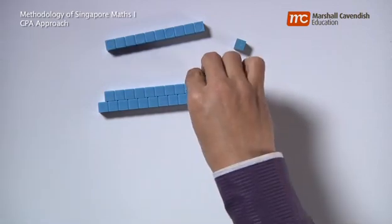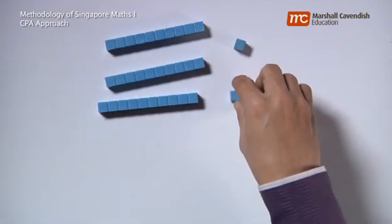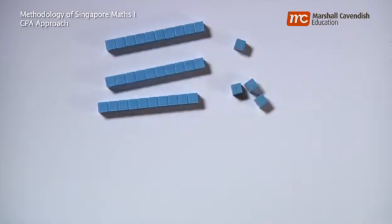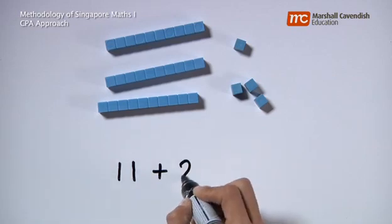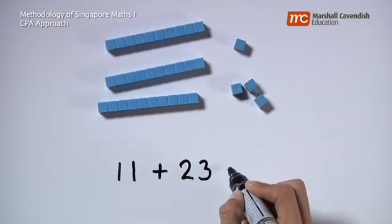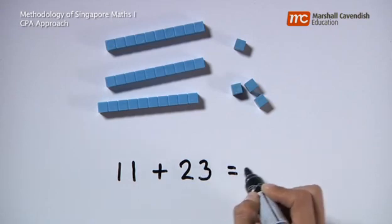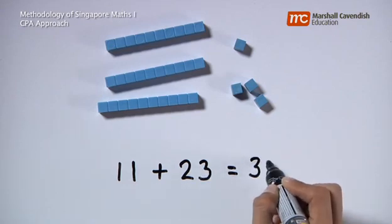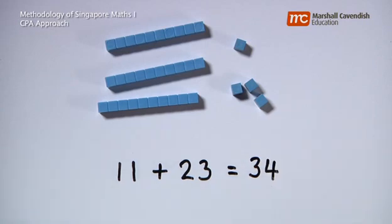3 tens and 4 ones. This is an example of a CPA approach where children will eventually learn it symbolically. That 11 plus 23 is equal to 34. This number sentence is in symbols. It is abstract.